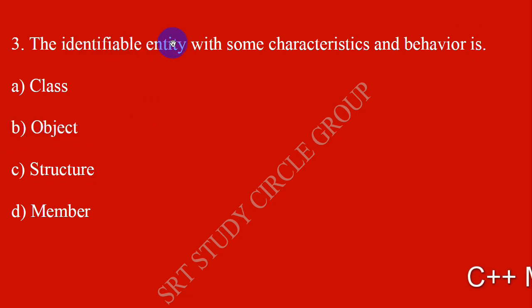An identifiable entity with characteristic and behavior is an Object — that is the answer in Object Oriented Programming.